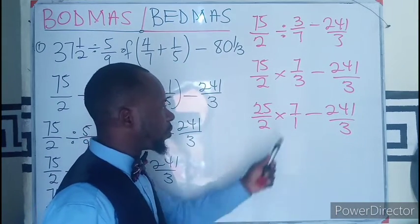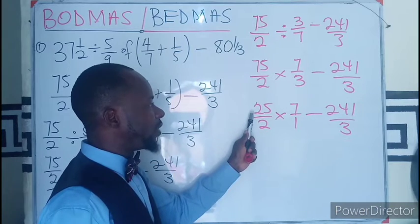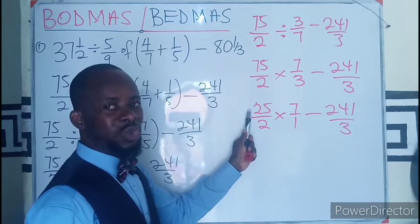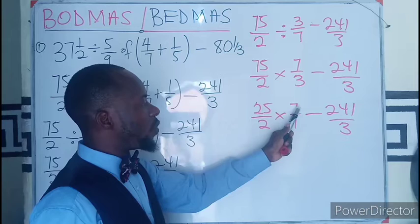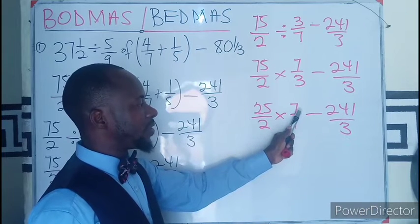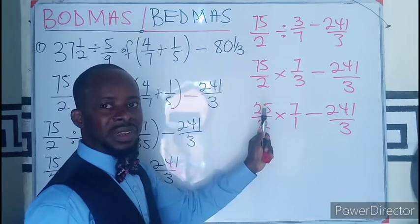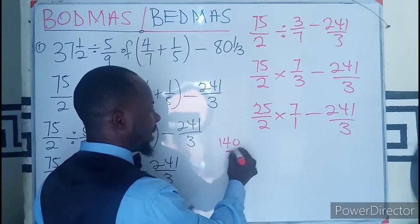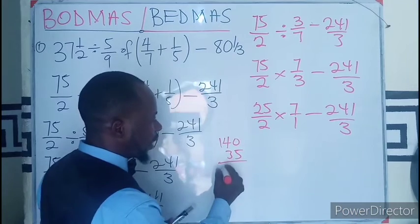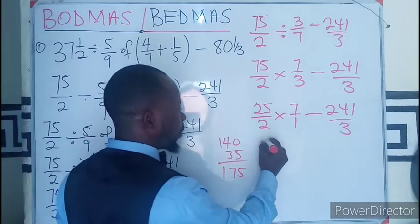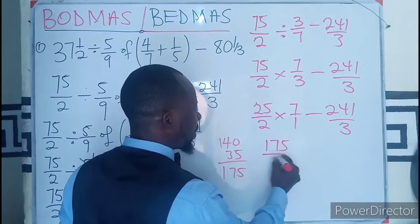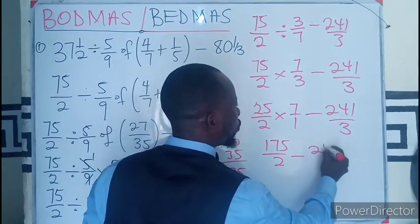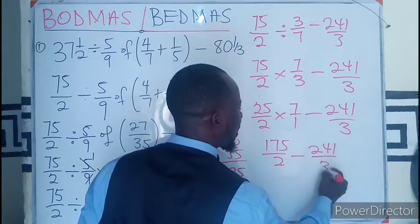Now we are going to employ our multiplication. So here, this will multiply 27, 20, 140, 140 plus 75, 35. So we can have 140, then 35, that will be 175. So 175 divided by 2 minus 241 over 3.